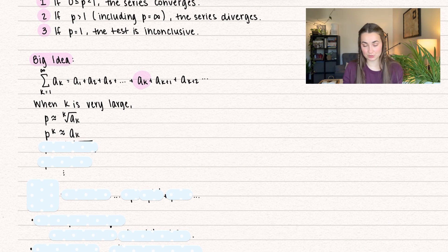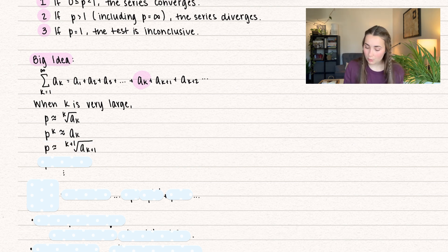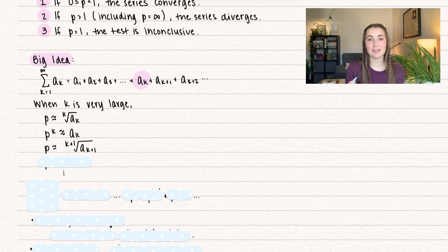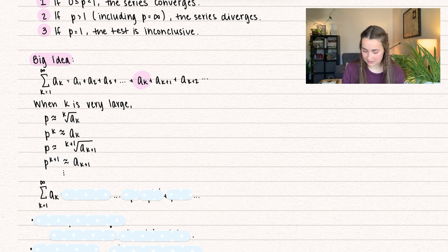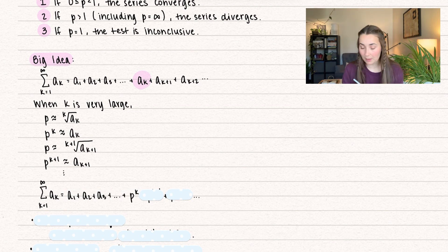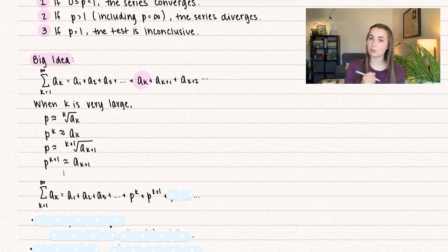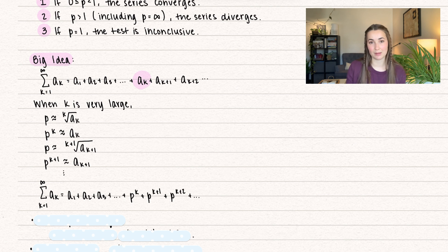We can also find what the rest of those terms are equal to. The next term — the k plus 1 term — gives p approximately equal to the k plus 1 root of a sub k plus 1. You raise both sides to the k plus 1 power, and we have what that term is equal to. So replacing in our series, we get p to the power of k replacing a sub k, p to the power of k plus 1 replacing a sub k plus 1, and then p to the k plus 2, and so on.